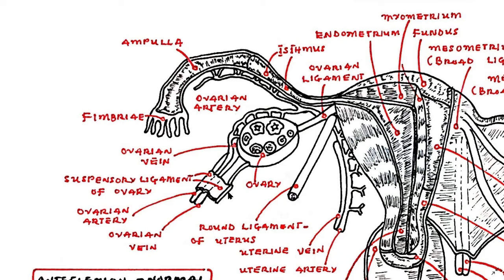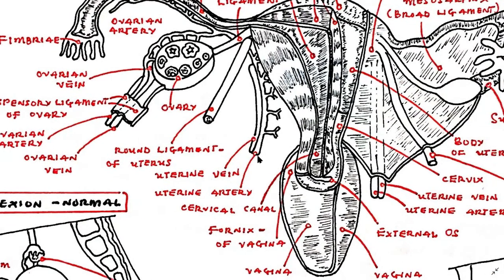The ovary is thus considered an intraperitoneal organ. The ovaries are supplied by the ovarian arteries and drained by the ovarian veins.